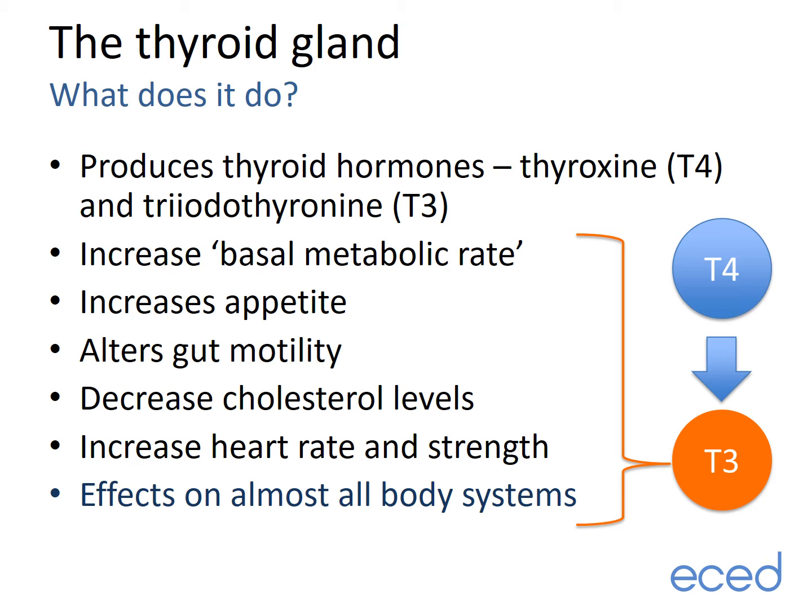T3 is the active thyroid hormone; T4 has to be converted to T3 before it becomes active. Thyroid hormone is active across many parts of the body performing a number of roles. These include increasing metabolic rate — the speed at which we burn calories — increasing appetite, increasing gut motility, which means more bowel movements when levels are raised, and also reduces cholesterol levels and increases the heart rate and the strength of the heartbeat.